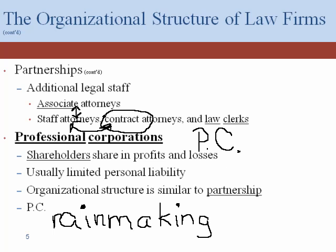One distinction between professional corporations and LLPs is that you can have a professional corporation with just one shareholder or with many. A professional corporation is going to have limited personal liability, just like an LLP. The organizational structure is going to be very similar to a partnership, and we have 'PC' after the name of the company.